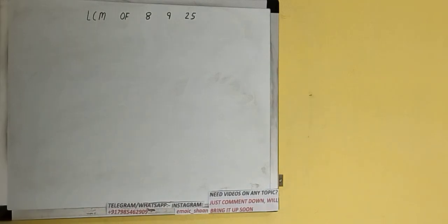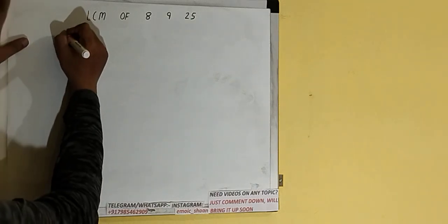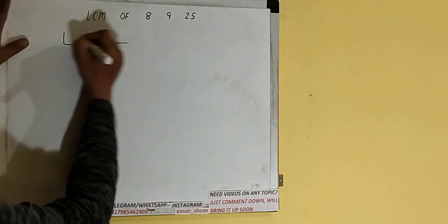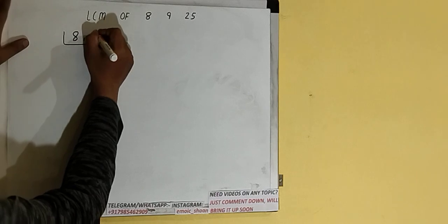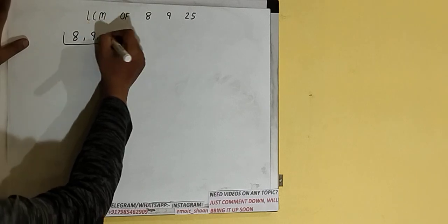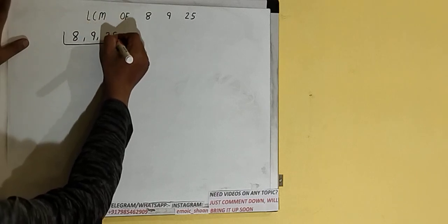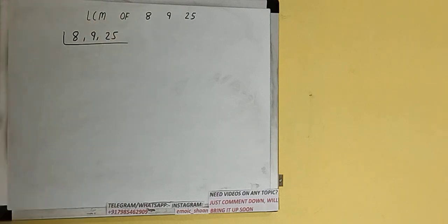Hello friends, and in this video I'll be helping you with the LCM of the numbers 8, 9, and 25. So let's start. First of all, we need to write down all three numbers like this: 8, 9, 25. Next, we need to start with the lowest prime number, 2.